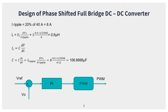For the capacitor, since ic = C × dv/dt, we get C = I_ripple × d×Ts / V_ripple = 8 × 0.4 × (1/250k) / 0.12 = 106.67 µF.